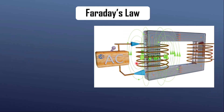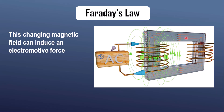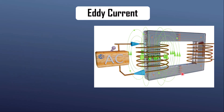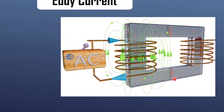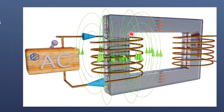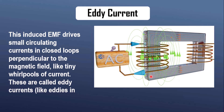This creates a time-varying magnetic field that expands and contracts around the wire with each cycle of the AC. This changing magnetic field will induce an electromotive force or voltage in nearby conductors, windings, and also the transformer core — a phenomenon known as electromagnetic induction. This induced EMF drives small circulating currents in closed loops perpendicular to the magnetic field, like tiny whirlpools of current. These are called eddy currents, like eddies in water.